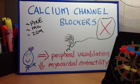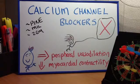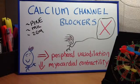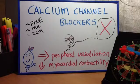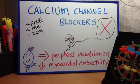Uses: this class of drugs is used in the treatment of hypertension and Prinzmetal angina. Verapamil and diltiazem are also used to treat supraventricular tachycardias.